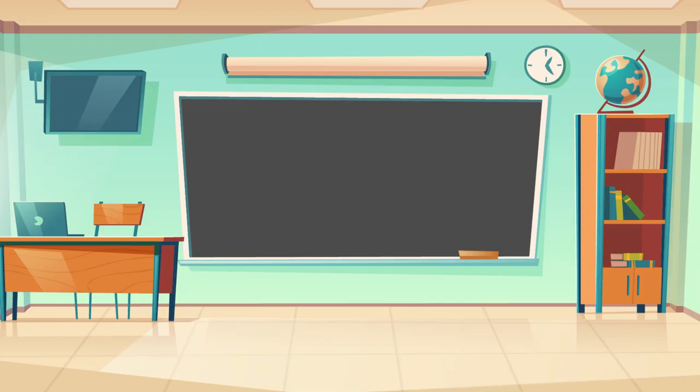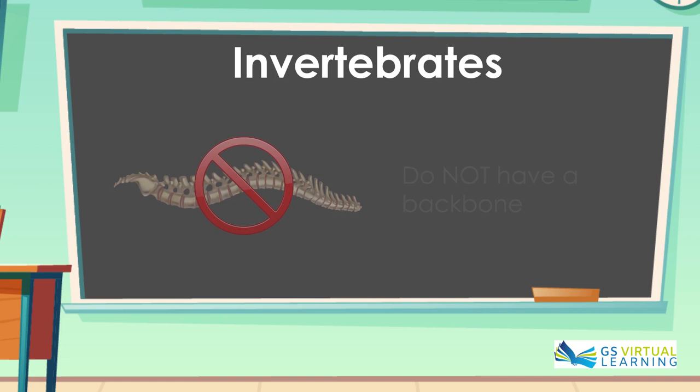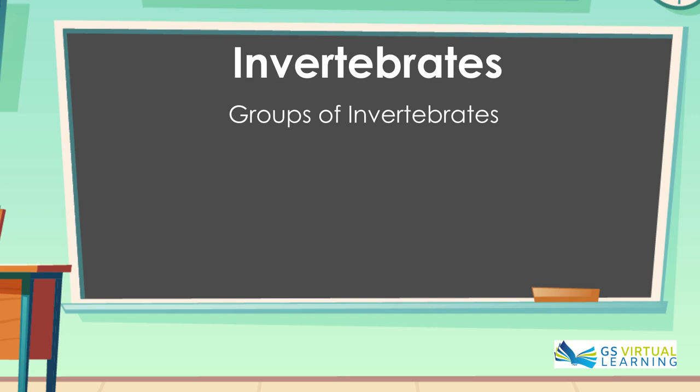Welcome to today's lesson. Today we're going to look at invertebrates. Invertebrates are animals without a backbone. There are six groups of invertebrates.